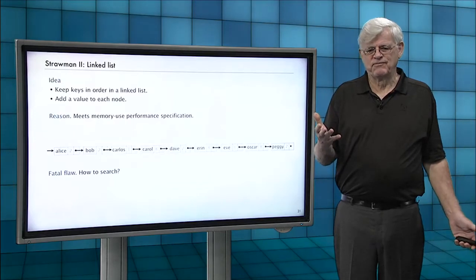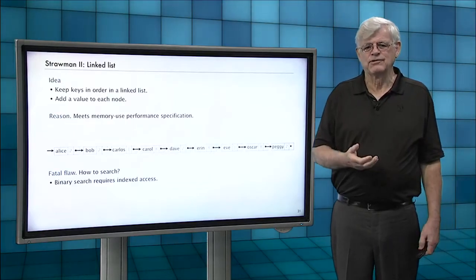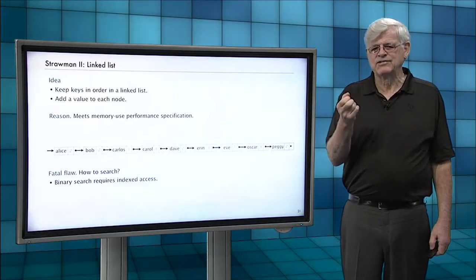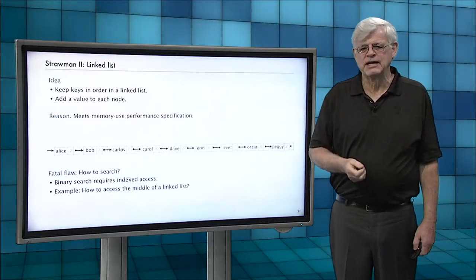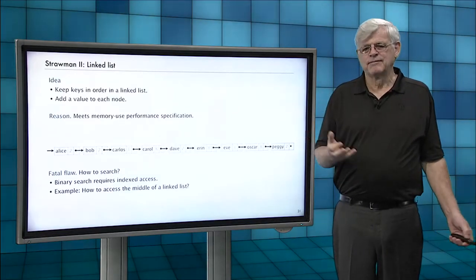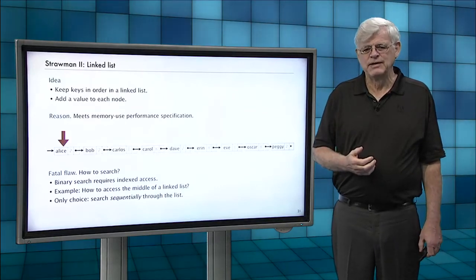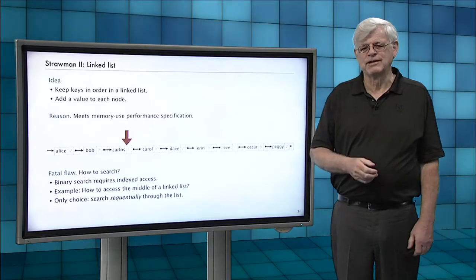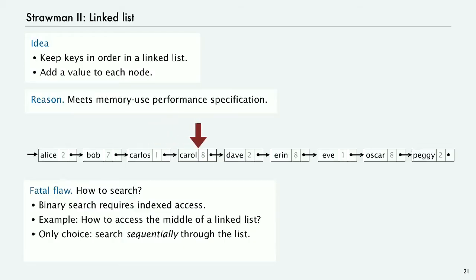But that one's got a fatal flaw: how do you do the search? With binary search, we needed that indexed access into the array. You need to be able to quickly get to the middle. How do you get to the middle of a linked list? Really the only thing you can do is search sequentially through the list to get to the middle or to search for any specific key.